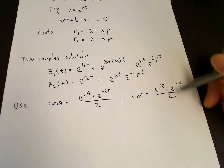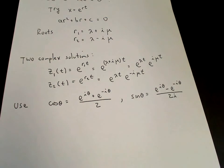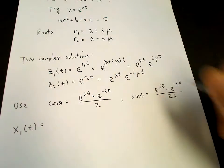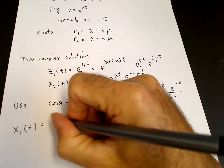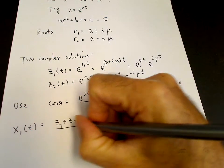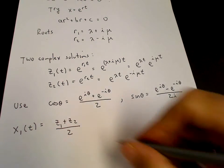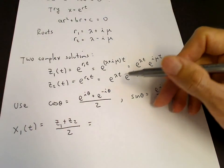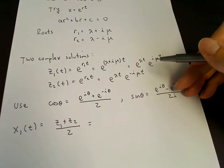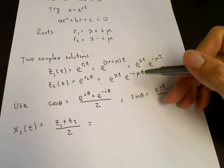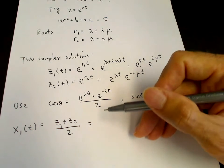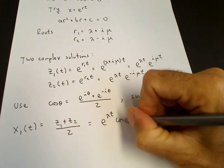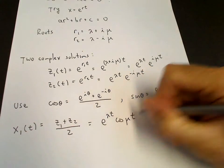We can subtract them and divide by 2i to get a sine. So we construct our first real solution x1 as z1 plus z2 over 2. Adding these two, we have a common factor of e to the lambda t, then e to the i mu t plus e to the minus i mu t over 2, which is cosine mu t. So x1 equals e to the lambda t times cosine mu t, which is real.